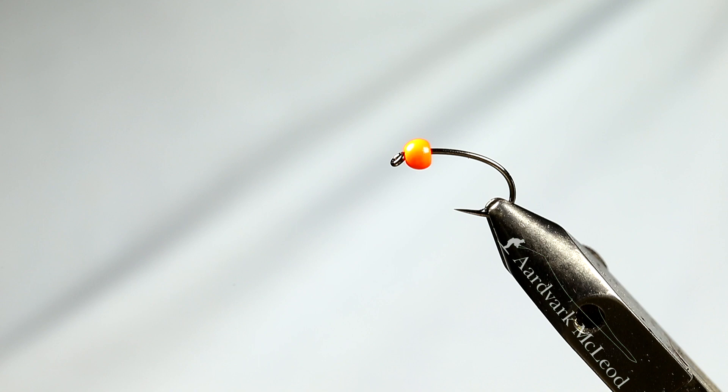But if you can find a strong wire curved shank for steelhead, salmon and so forth, they will be perfect. If not, look towards the carp fishing world and you'll find some really strong wire, good quality hooks, including the one I've got in the vice here.